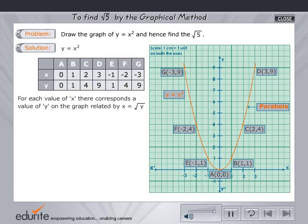For each value of x, there corresponds a value of y on the graph which is related by x equals root y. If y equals 5, then x equals root 5.